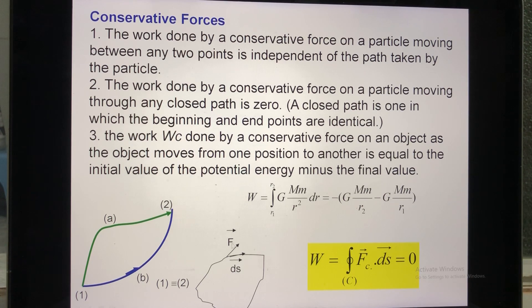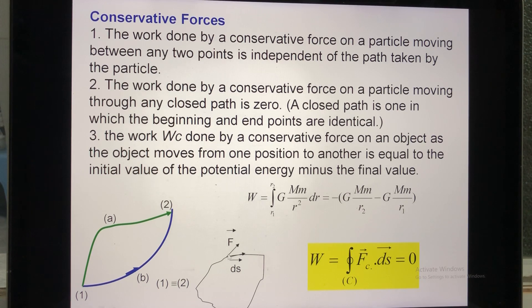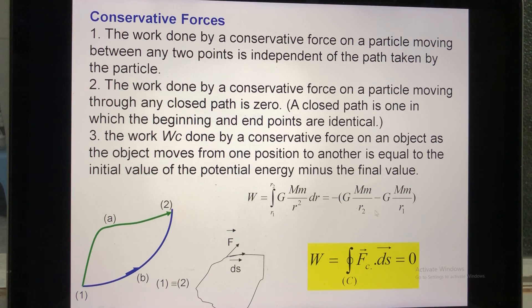The second example: if the system contains only conservative forces and the object moves along a closed path, then the work along that closed path equals zero, because the initial and final positions are the same.